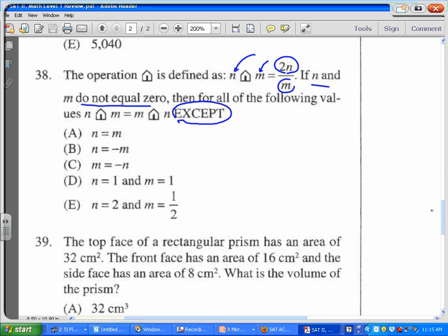If you have 2n over m, that's when you have n symbol m. That's going to be the same thing as twice the first one, 2m over n.